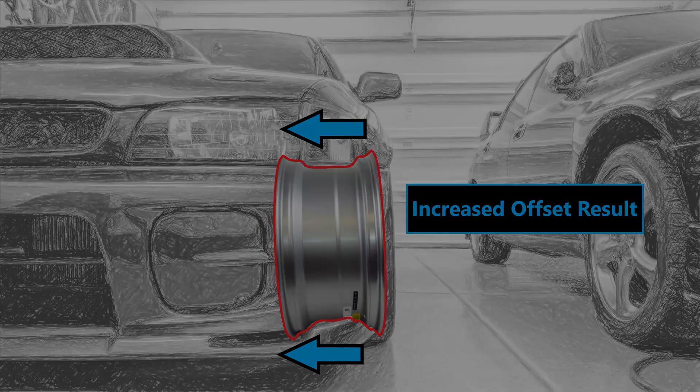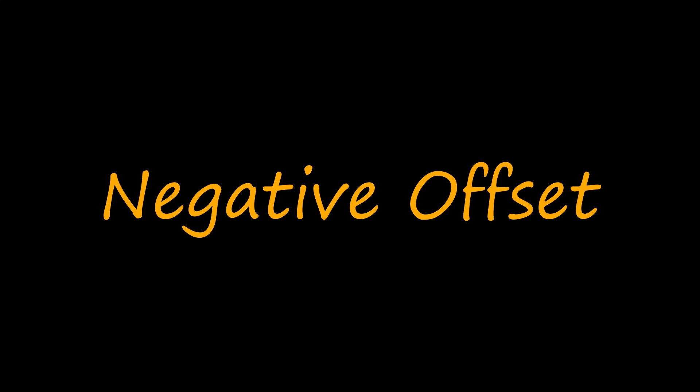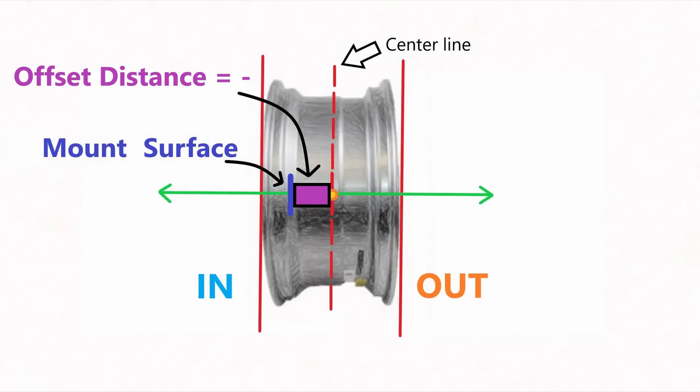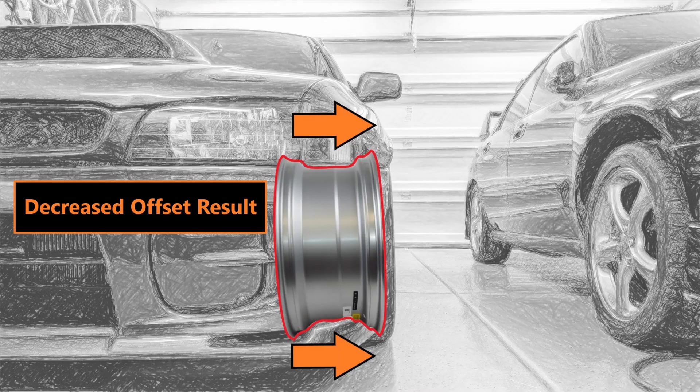Doing this will place my wheel deeper into the wheel well when I mount it to the vehicle. A negative value means the surface is on this side of the centerline, the inner. Moving the mounting surface negative, or in the direction of negative, looks like this. The wheel is moved away from the wheel well.